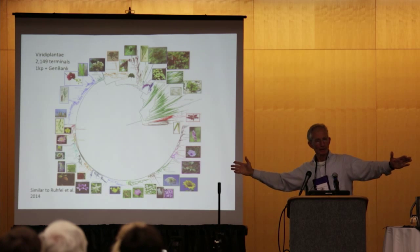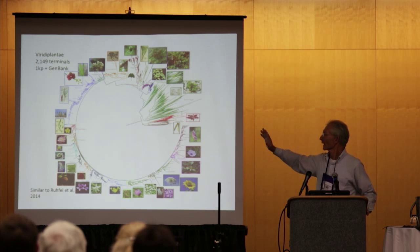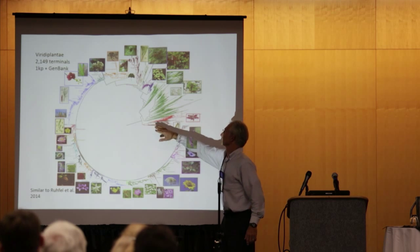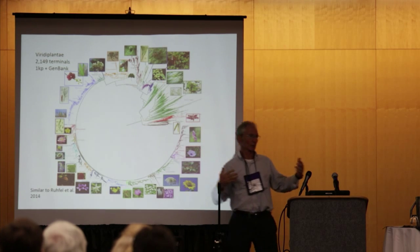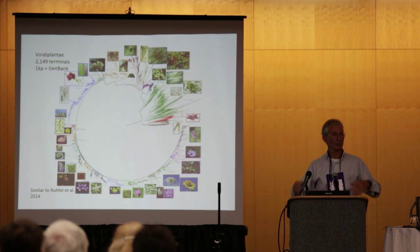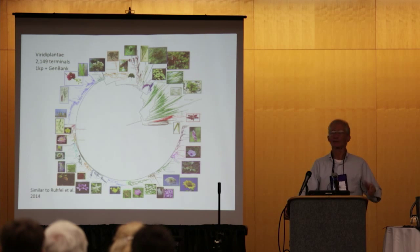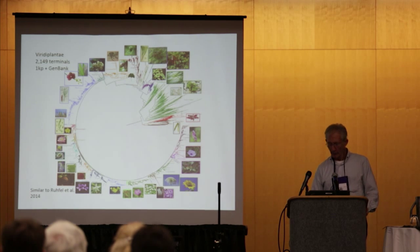Here's our largest plastid gene tree, with over 2,000 terminals. We have red and brown algae here — this is where the tree is rooted. We have the chlorophytes and the streptophytes, and it's really a tree in very close agreement with trees that have been published at a broad scale, for example Ruhful et al. with a much smaller number of taxa for the plastid genome. I'll now go through the smaller dataset of 1,900 taxa and highlight a few parts of this tree.